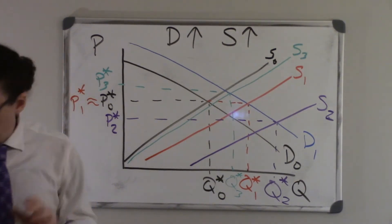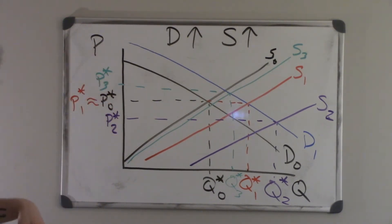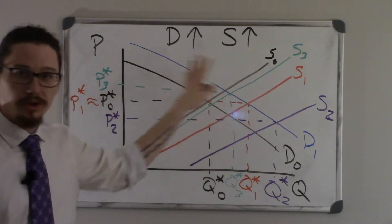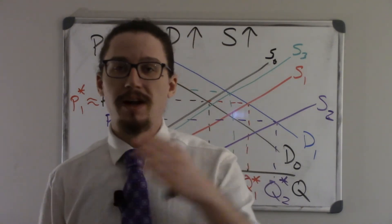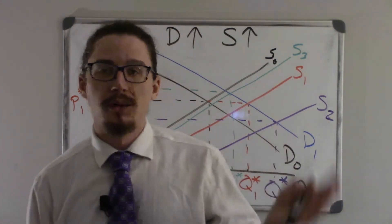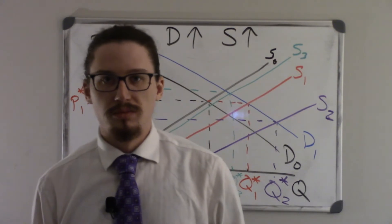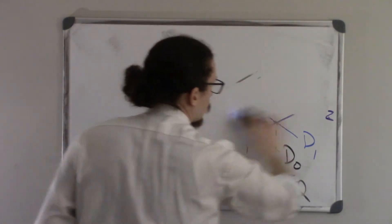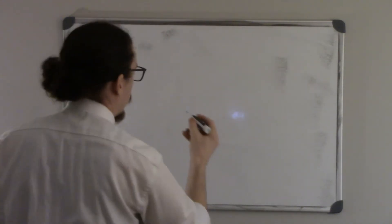We don't want to rely on just the drawing because most of the time when I do the shifting, I shift the curves in equal amounts, so it always lines up with either price or quantity staying the same — which is misleading. That's another reason why we don't want to rely on just the drawing. So let's go ahead and make our reference table.